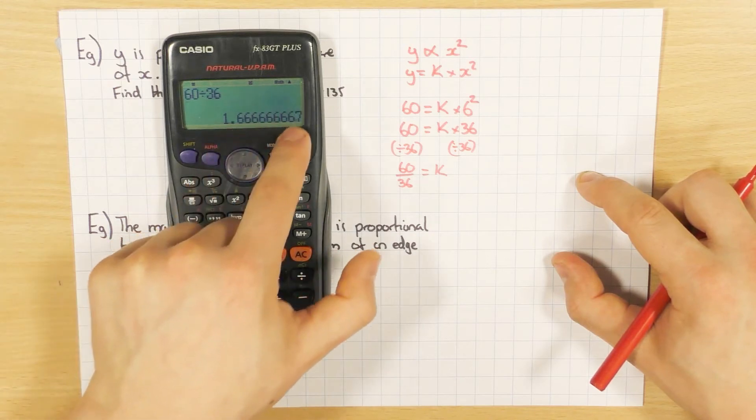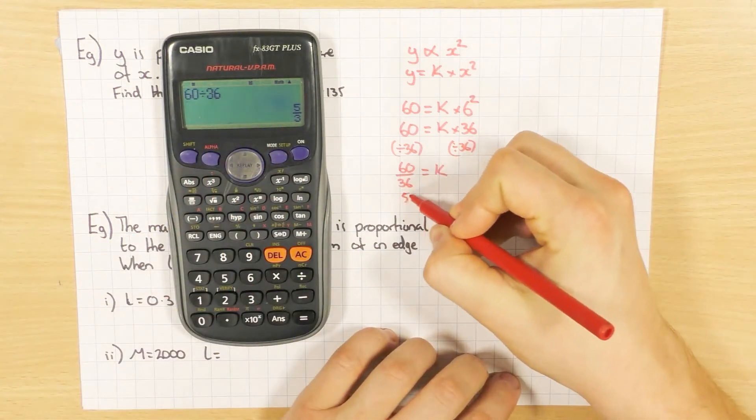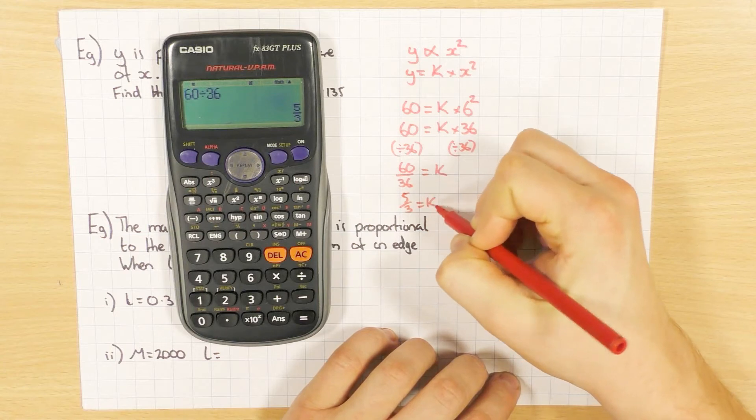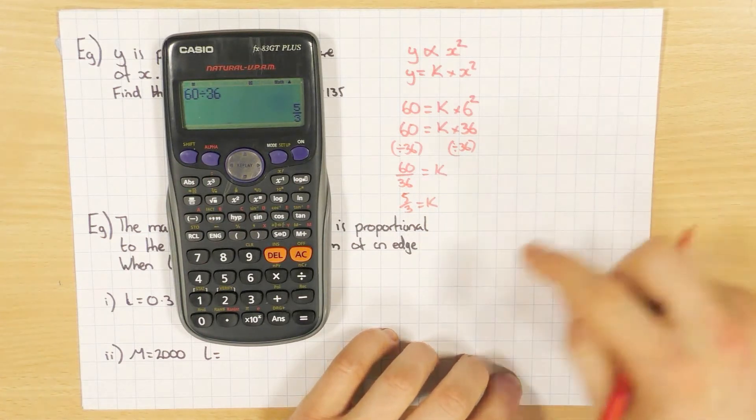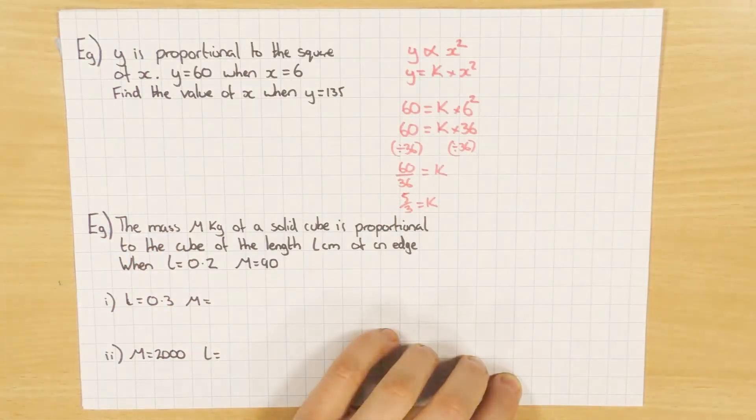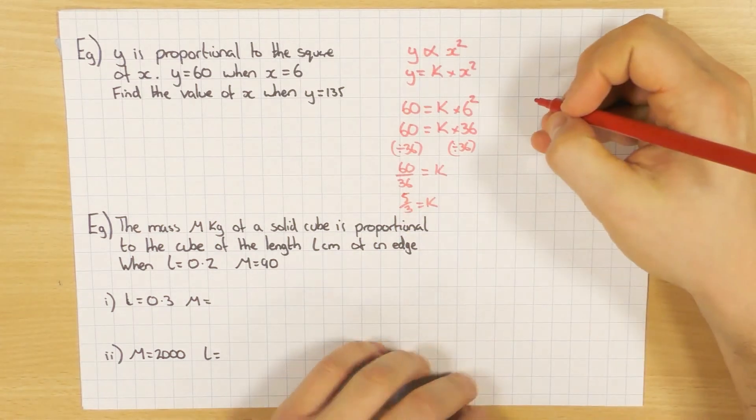Because see, there you go, it's recurring. Keep it as a fraction as 5 over 3. And then you won't get into any trouble. So if it's a recurring decimal, don't use that. Use the fraction. It's much safer.